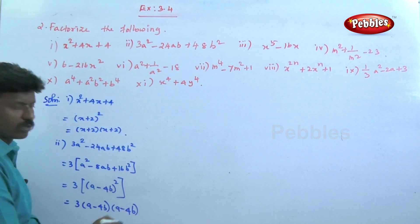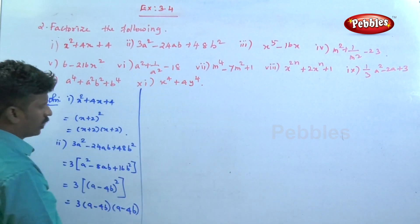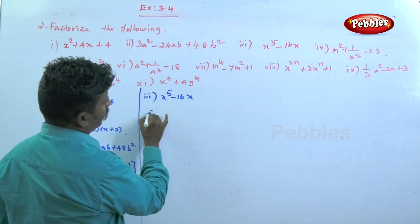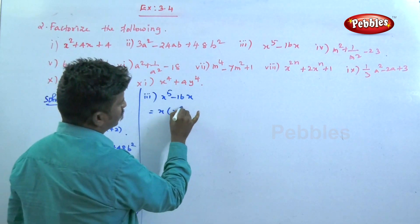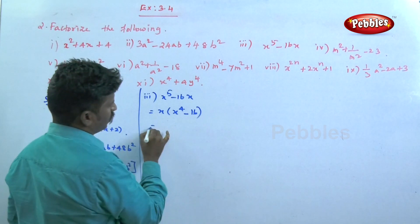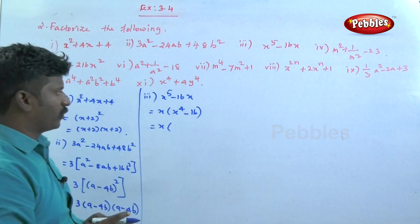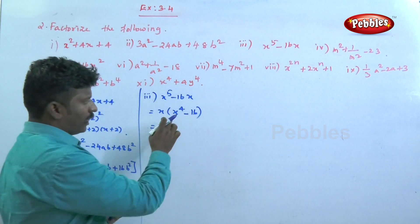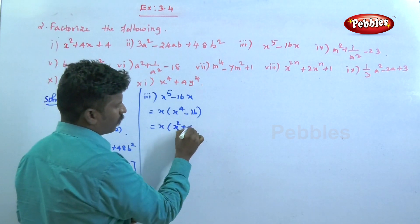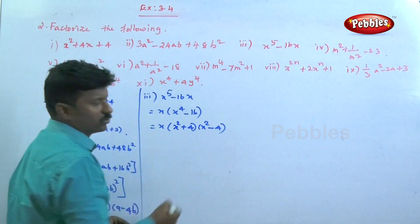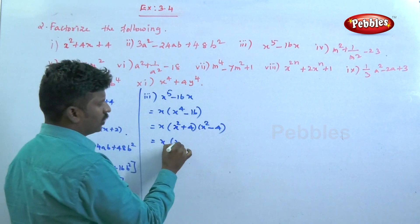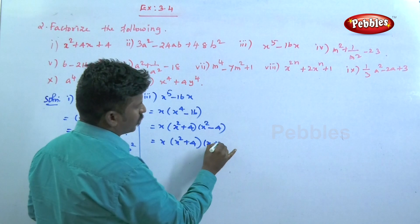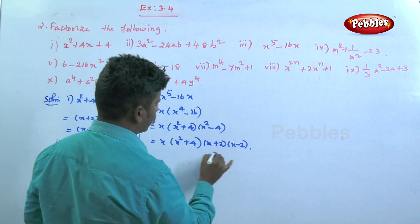Question number three: x to the power 5 minus 16x. Taking x as common, we get x into x to the power 4 minus 16, which is of the form a squared minus b squared. Using the same identity, x squared plus 4 into x squared minus 4, giving factors x into x squared plus 4 into x plus 2 into x minus 2.